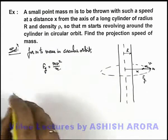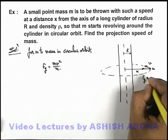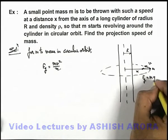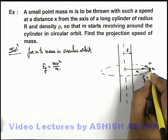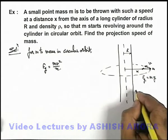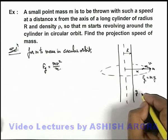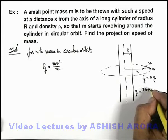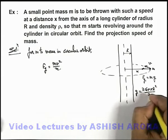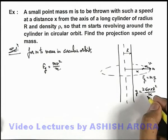If we talk about this gravitational force, this can be written as m multiplied by the value of g at this point. And for a cylinder, g outside at a distance x, we can write the value of g as 2 G ρ π R squared by x, which we already studied in the theoretical section.